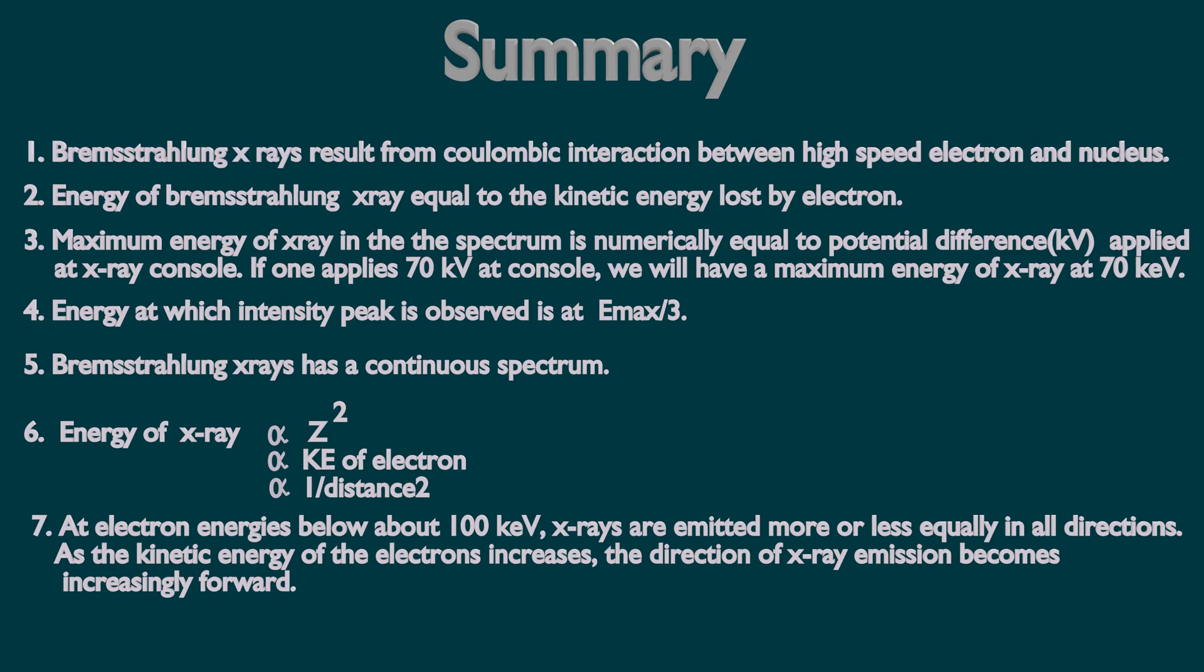At electron energies below 100 kV, X-rays are emitted more or less equally in all directions. As the kinetic energy of the electrons increases, the direction of X-ray emission becomes increasingly forward.